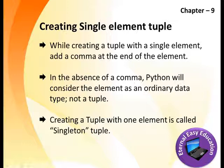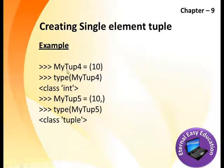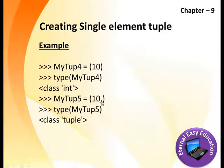Creating a single-element tuple: yes, it is possible. While creating a tuple with a single element, add a comma at the end of the element. In the absence of a comma, Python will consider the element as ordinary data, not a tuple. Creating a tuple with one element is known as a singleton tuple. For example, my_tuple4 = (10) — the type() function will say it is int. But my_tuple4 = (10,) — now it says tuple.